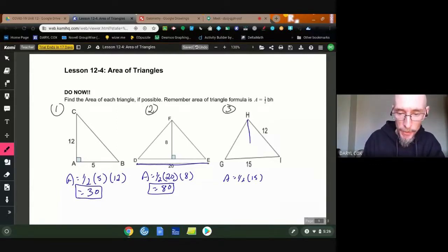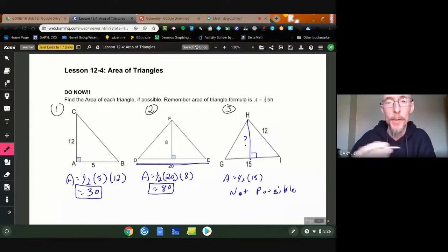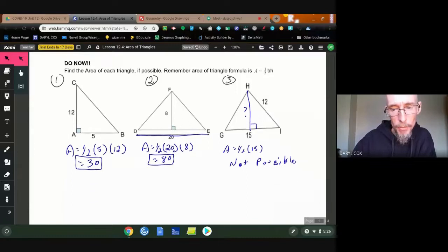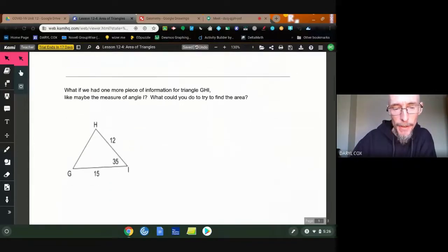So twelve is not my height. My height has to come in this way. And I don't know what that is. So this one is not possible. Okay? So this is again where trig comes and helps us. So let's see what we could do with this if I knew a little more information.